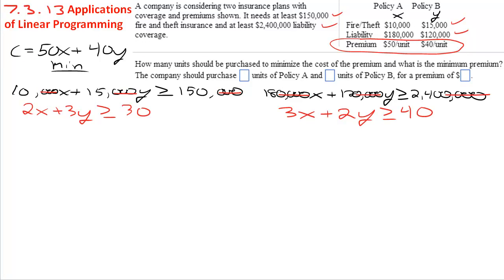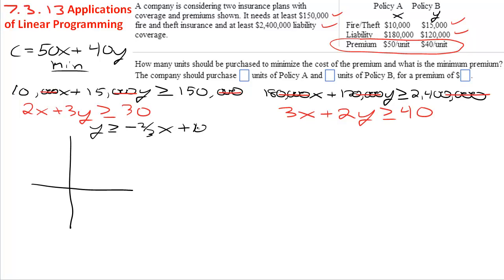We could also do it by hand with the simplex method, but that takes too long. We could do it with the graphical method. When you only have two variables and two constraints it's fairly easy to do graphically. If you solve the constraints for y, you get y greater than or equal to negative two-thirds x plus 10, and y greater than or equal to negative three-halves x plus 20. Both lines have negative slopes — one hits the y-axis at 10 and the other at 20, with one being steeper than the other.